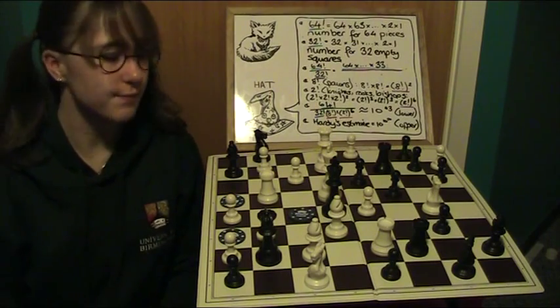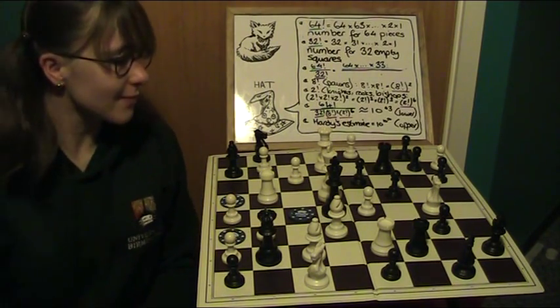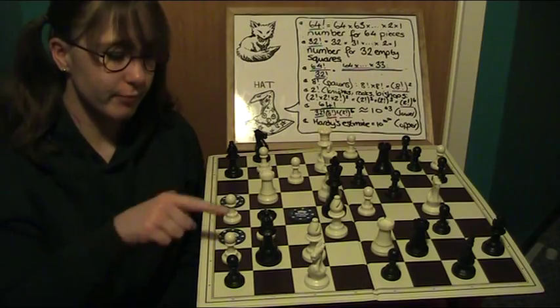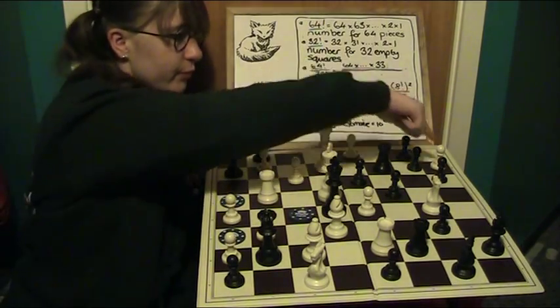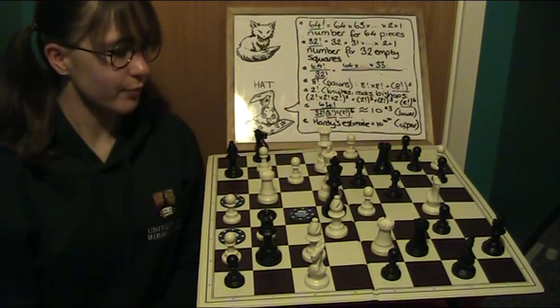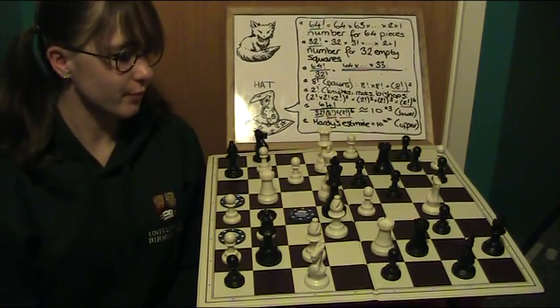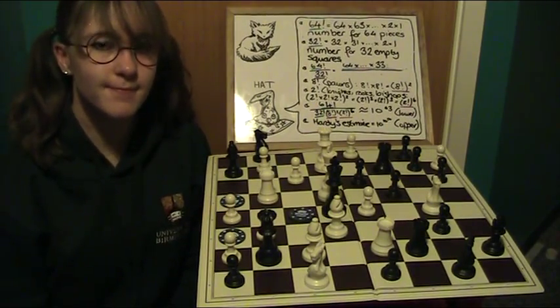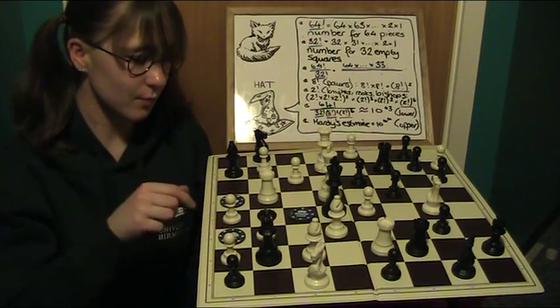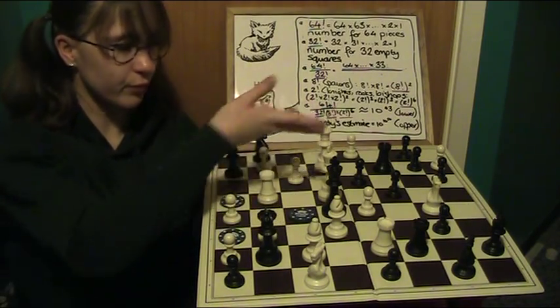However, are these pieces really unique? Let's take a look. Notice that each player has 8 pawns. It makes no difference to the game if we interchange these. There are 8 factorial ways of changing these around, because there are 8 ways to place the first pawn, and then 7 for the next and so on until you have no pawns left.